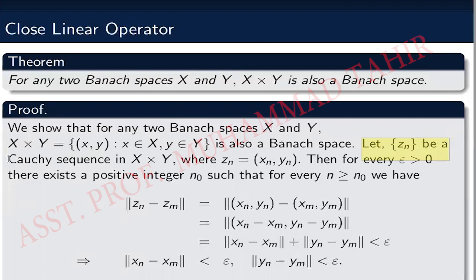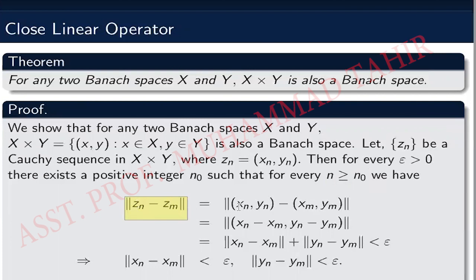To show this, let z_n be a Cauchy sequence in X cross Y. We can write z_n as the ordered pair (x_n, y_n). Now we apply the Cauchy sequence definition to z_n: for every epsilon greater than zero, there exists a positive integer N-naught such that for n, m greater than or equal to N-naught, we have the norm of z_n minus z_m less than epsilon. Now z_n minus z_m equals the ordered pair (x_n minus x_m, y_n minus y_m), and its norm is the norm of x_n minus x_m plus the norm of y_n minus y_m.